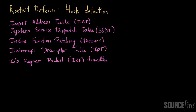There are many places in the system where a hook can be placed. These include the Import Address Table, the System Service Dispatch Table or SSDT, inline function patching, the Interrupt Descriptor Table or IDT, and also the IO Request Packet handler, or IRP handler. I've talked about all three of these in previous videos.